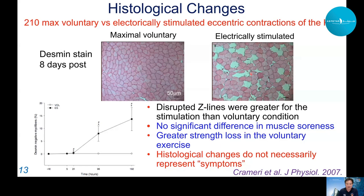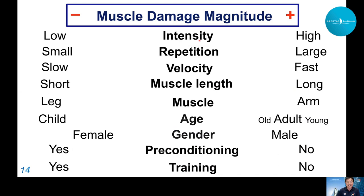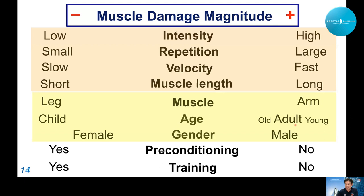Factors affecting muscle damage from eccentric exercise: higher intensity and greater number of repetitions cause more damage. Fast velocity eccentric contractions induce more damage than slow velocity, and longer muscle length induces more damage. Arm muscles have more damage than leg muscles. For age, children have less muscle damage, adults have more, and younger adults have more than older people.